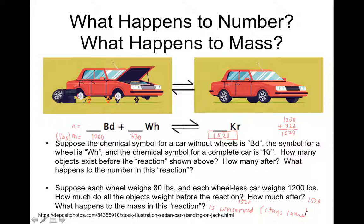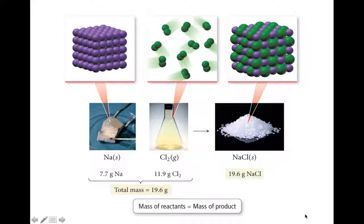So let's consider an example that's a little more like something you might do in a lab or in theory. Suppose we've got sodium and chlorine, and we're putting them together to make sodium chloride. Let's consider, first of all, the number of pieces.